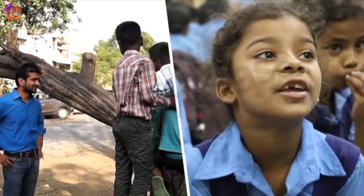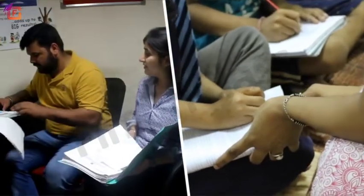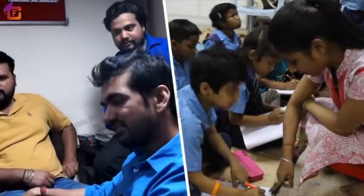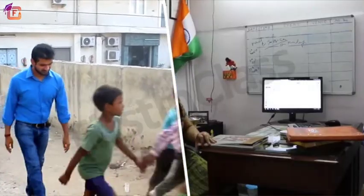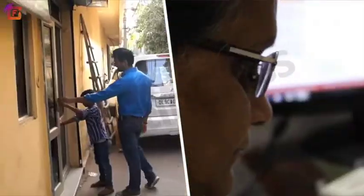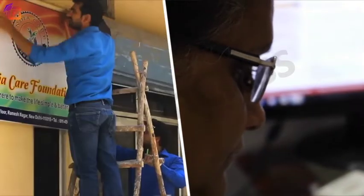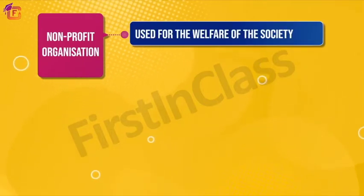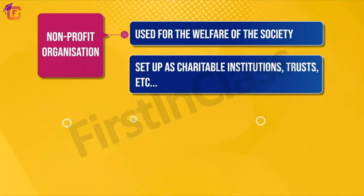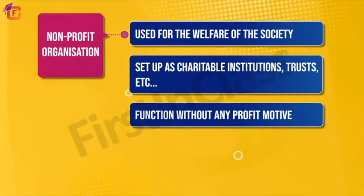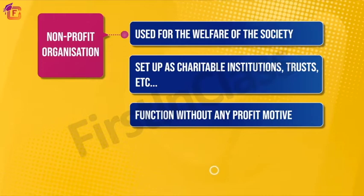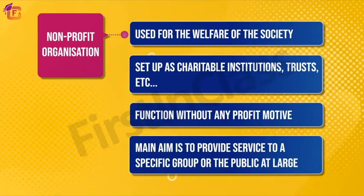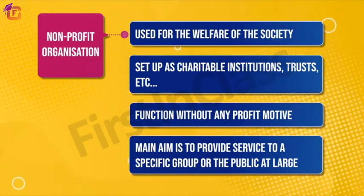Normally these organizations do not undertake any business activity and are managed by trustees who are fully accountable to their members and the society for the utilization of the funds raised for meeting the objectives of the organization. Not-for-profit organizations refer to organizations used for the welfare of the society and are set up as charitable institutions which function without any profit motive. Their main aim is to provide service to a specific group or the public at large.